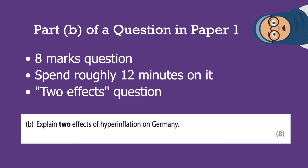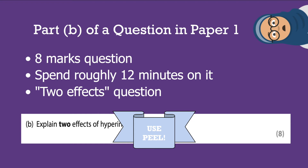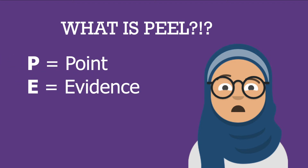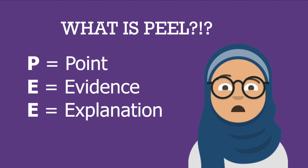Part B requires you to give two effects of an event or situation. Here, they're asking us to explain two effects of hyperinflation on Germany - you can choose any two valid effects. To make sure your answer is perfect, you must use P.E.L. P stands for Point, the first E stands for Evidence, the second E stands for Explanation, and L stands for Link. You might have heard of P.E.E. before, but P.E.L. is different because it includes a link, which I'll explain further.